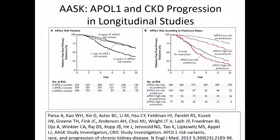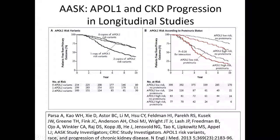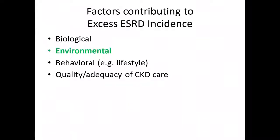Other NIDDK-funded studies — the CRIC study and the AASK study — have shown the powerful effect of APOL1 mutant alleles on CKD progression in longitudinal studies, following up from the case-control studies. Two copies — not one, but two copies — of the mutant alleles confer risk, and this is true whether individuals have proteinuria or not, which is a potent risk factor for progression of kidney disease.